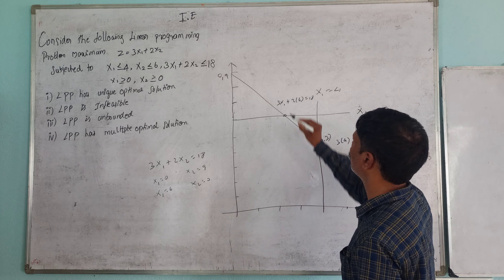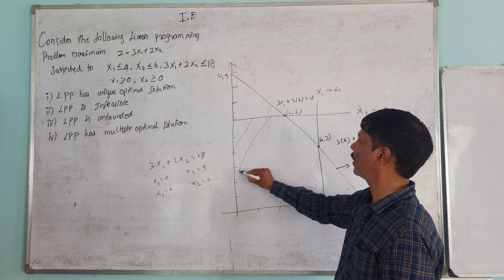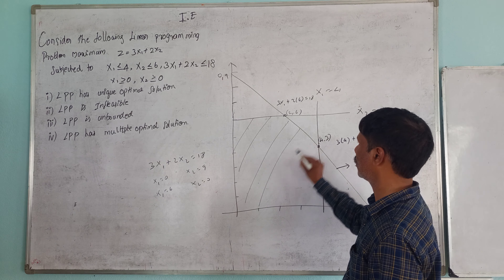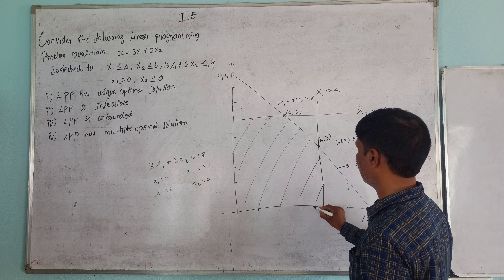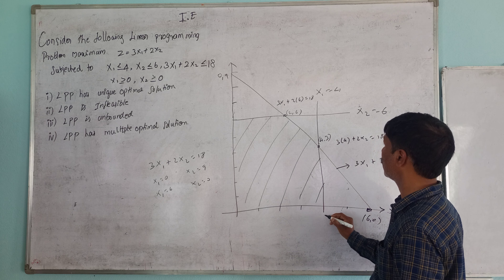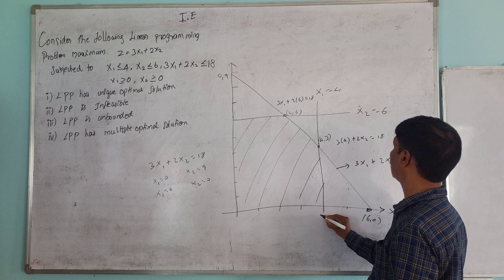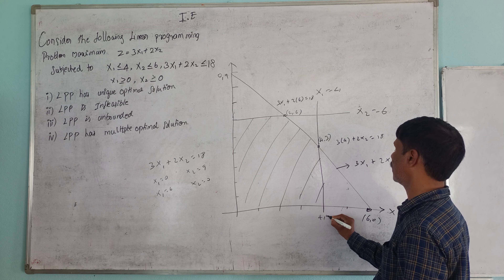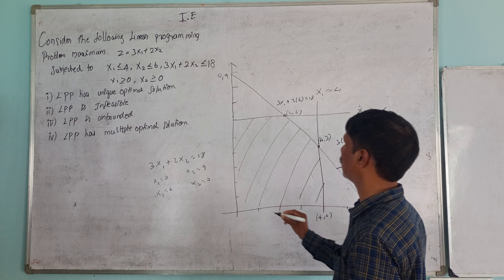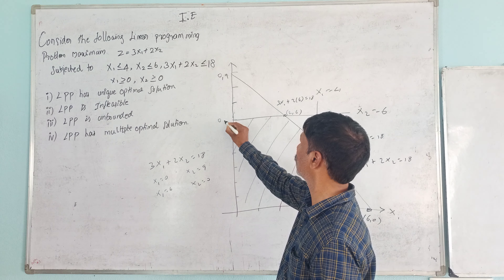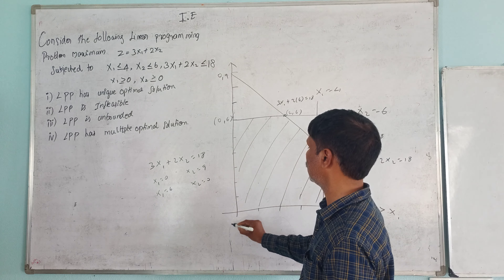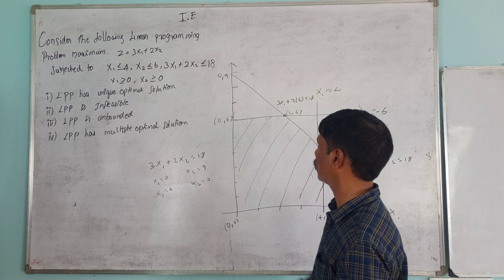Looking at the boundary region: the corner points of the feasible region are (0, 0), (4, 0), (0, 6), and the intersection points we computed. The boundary region is defined by these corner points.